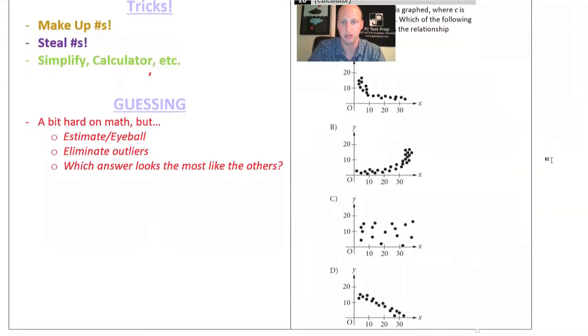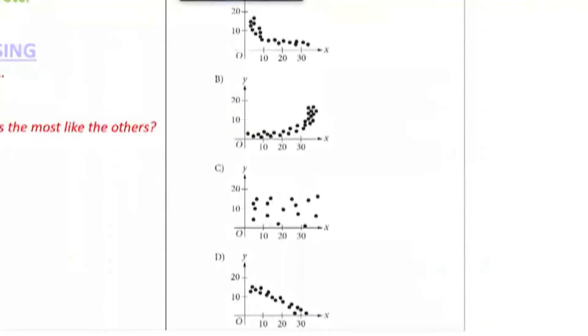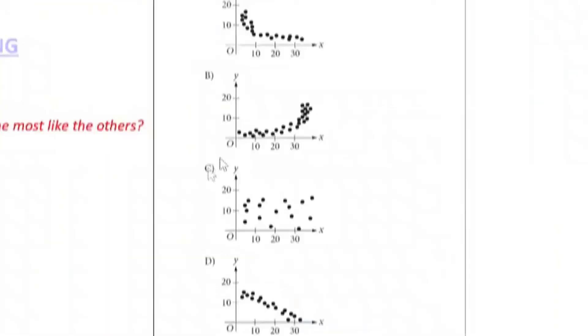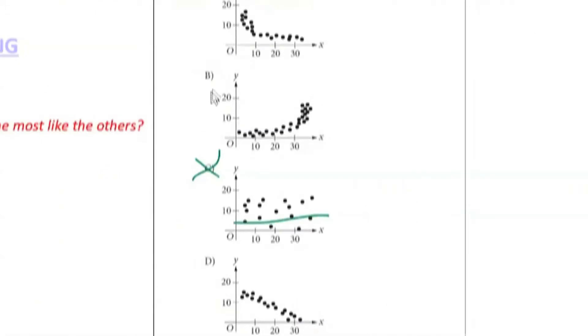On this particular problem, if you're doing eliminating, a good general rule of thumb is that the answer choice that looks not at all like any of the others is probably not the answer. Just try to find the ones that look the most like the others. Like notice how both A and B kind of have a curve to them, whereas this one is straight, so that makes me kind of not like D.